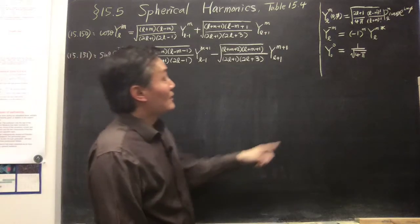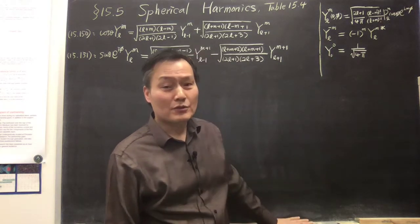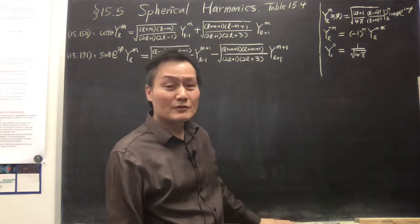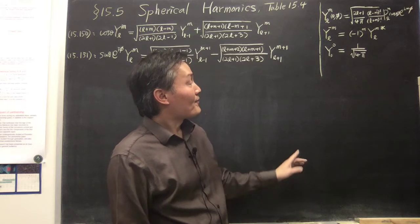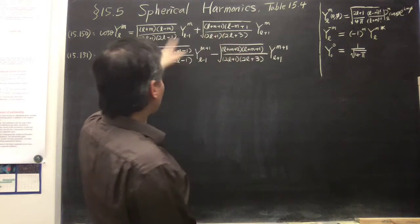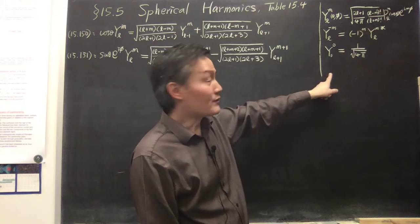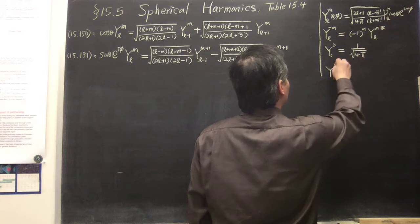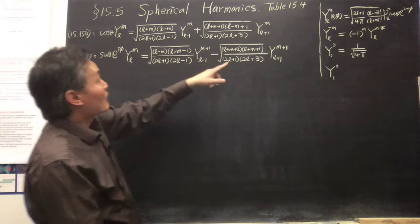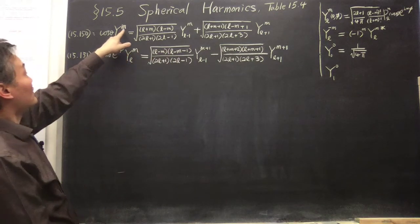For L equals zero, there is only one value: M equals zero. For L equals one, M can be 1, 0, or -1, but we don't need negative one because of the symmetry relation — we only need Y(1,1). To get Y(1,0), we use the first recurrence formula, which keeps M the same. Setting L equals zero and M equals zero, the left side becomes Y(1,0) and the right side involves Y(0,0), which we already have.